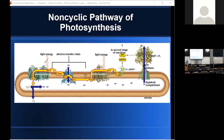When the photon of light reaches the reaction center of photosystem two, P680, it's going to excite two electrons and eject them into a higher energy state. Photosystem two needs to replace these two lost electrons, so it splits a molecule of water into two protons, two electrons, and one half of an O2 molecule. The two electrons replace those lost from photosystem two. The two protons accumulate in the thylakoid compartment, and the oxygen diffuses out. The two lost electrons then enter the electron transport chain of photosystem two.